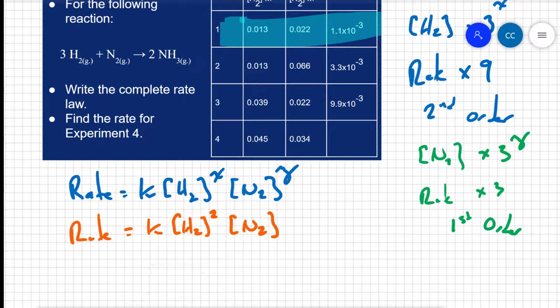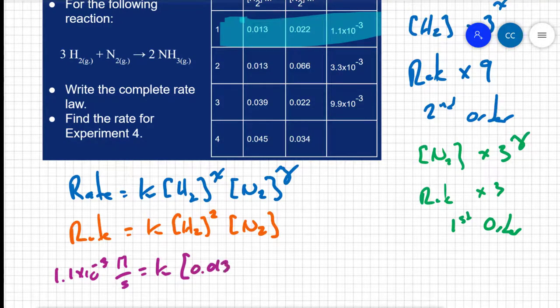I'm going to use the data from reaction 1 and plug that information into my rate equation. I'm going to say the rate which I know to be 1.1 times 10 to the negative 3 molarity per second equals K, that's what I'm looking for, times 0.013 molar squared times 0.022 molar.